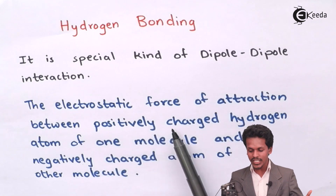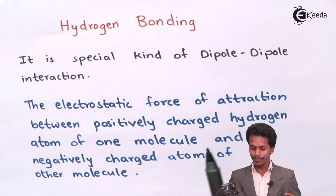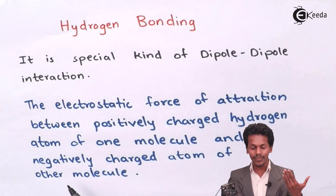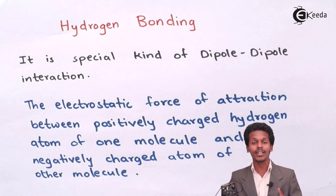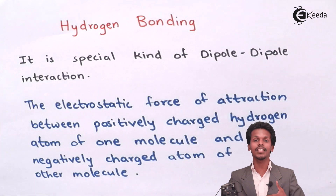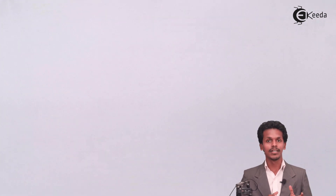Hydrogen bonding is the electrostatic force of attraction between a positively charged hydrogen atom of one molecule and a negatively charged atom of another molecule. Among the two interacting molecules, at least one molecule should consist of at least one hydrogen atom so that it could form hydrogen bonding with the other molecule. Let me give you an example to make this easy to understand.